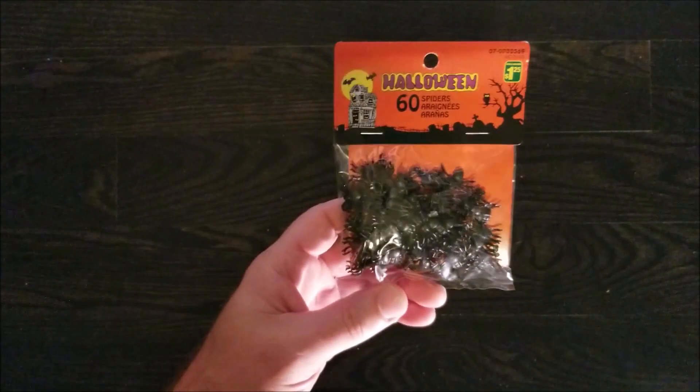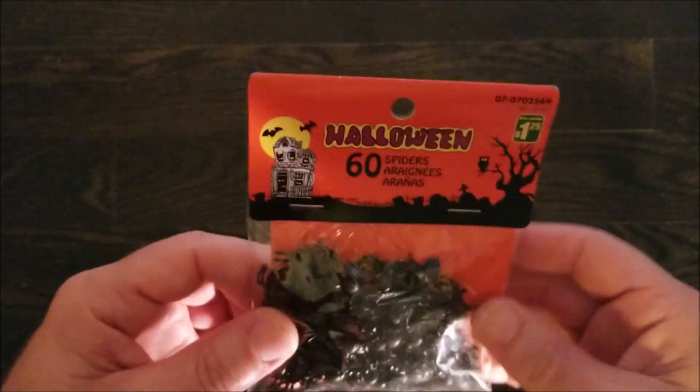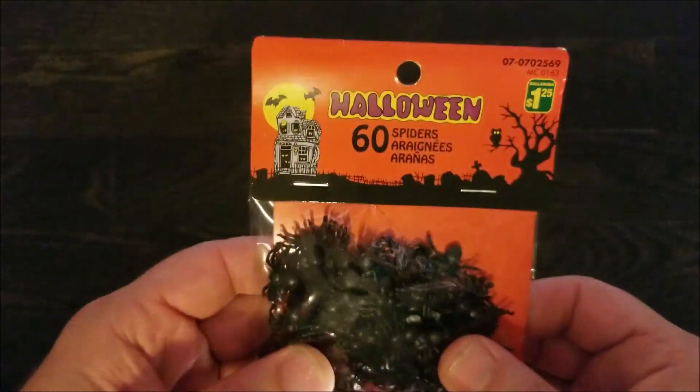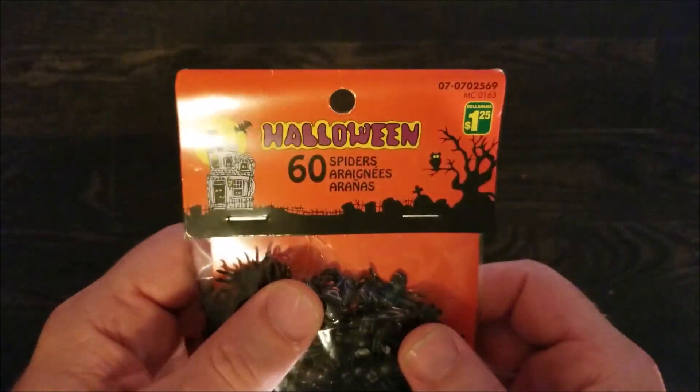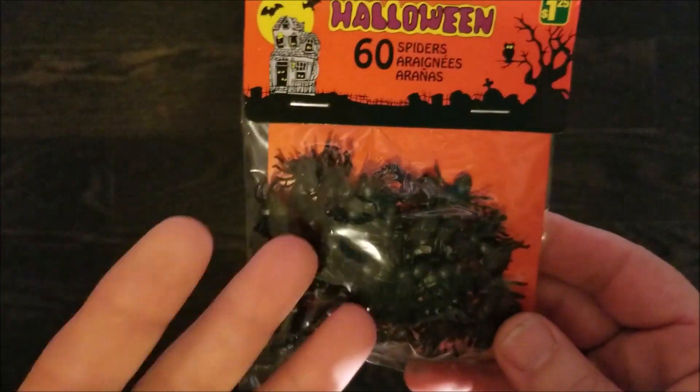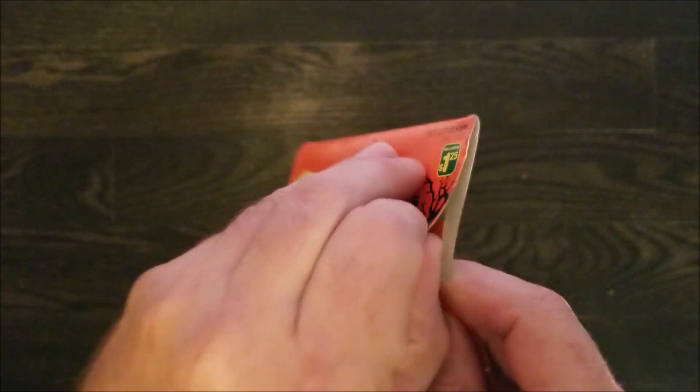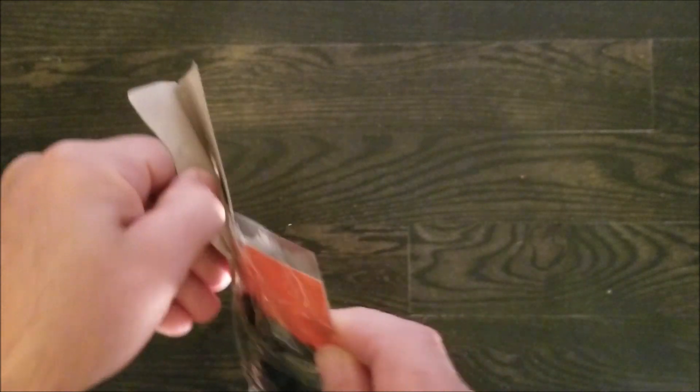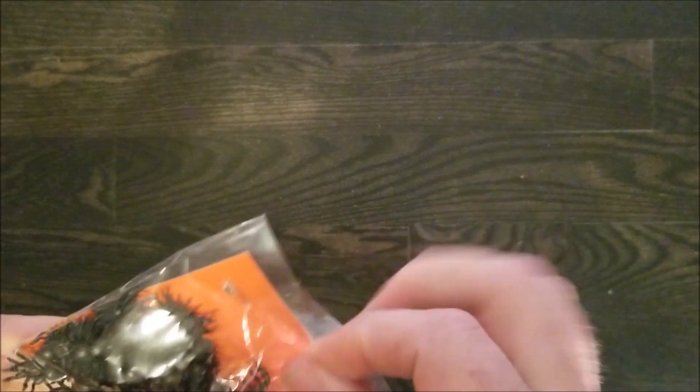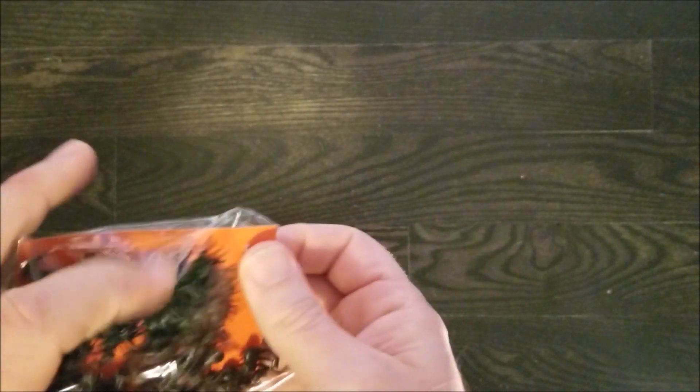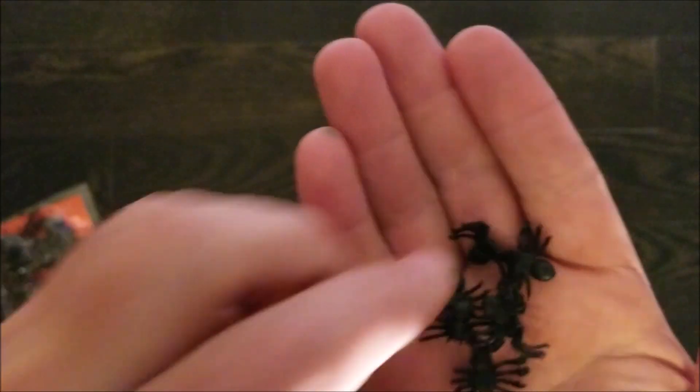First thing came from a Dollarama, and that is a pack of 60 little spiders. Now these are kind of tiny, so not super menacing I don't think, but a whole swarm of these would be really cool. I was thinking I could take these and pile them up. You can see they're kind of piled already, but basically just take a few of them and kind of put them on a base.